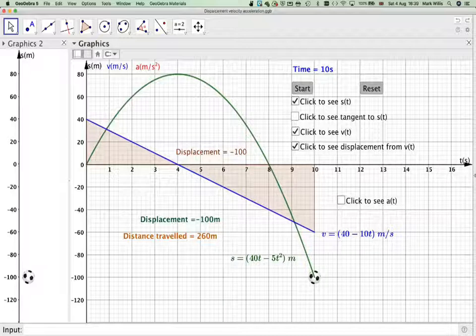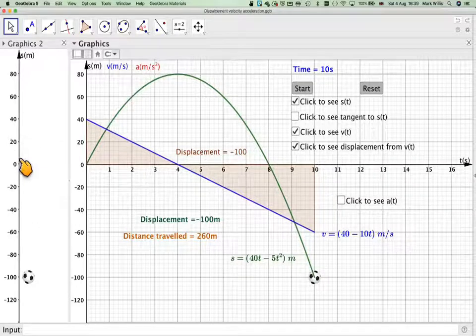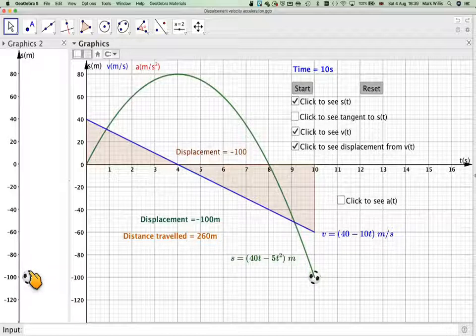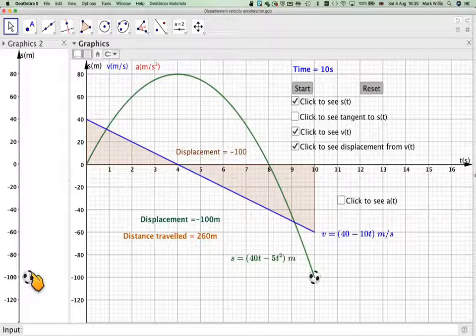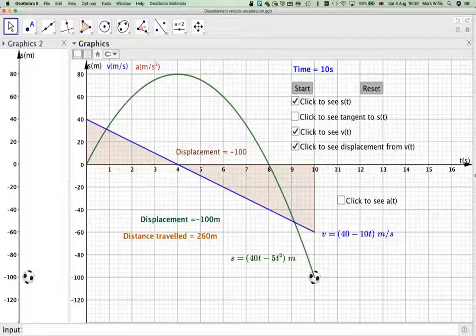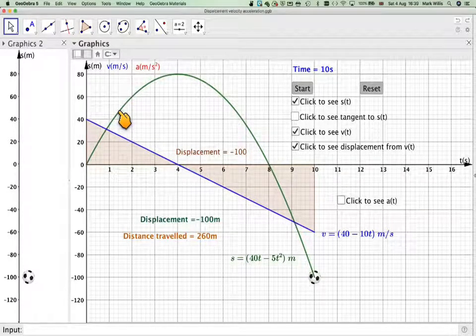Right, so you can actually see that quite easily. Because it goes up 0 to 80, that's 80, back down, that's another 80, 160, and then down another 100, which is 260 metres of total travel. But displacement, these will cancel each other out. Later, you do a thing called integration, which will actually give you this area here. And similarly, you'll do differentiation of this curve to get this curve.